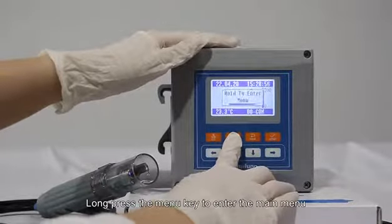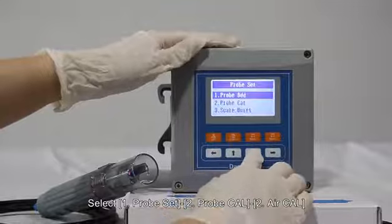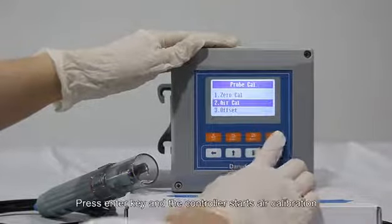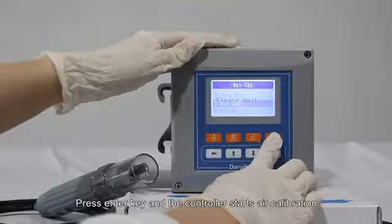Long press the menu key to enter the main menu. Select 1, Probe set, then Probe cal 2, Air cal. Press enter key and the controller starts air calibration.